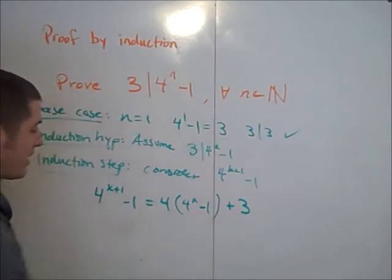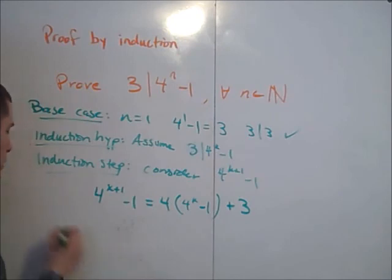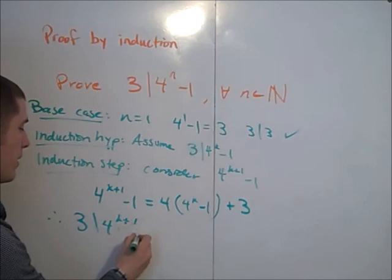So since 3 divides this number and 3 divides this number, 3 divides that, which is equal to this. 3 divides 4 to the k plus 1 minus 1. Therefore, 3 divides 4 to the k plus 1 minus 1.